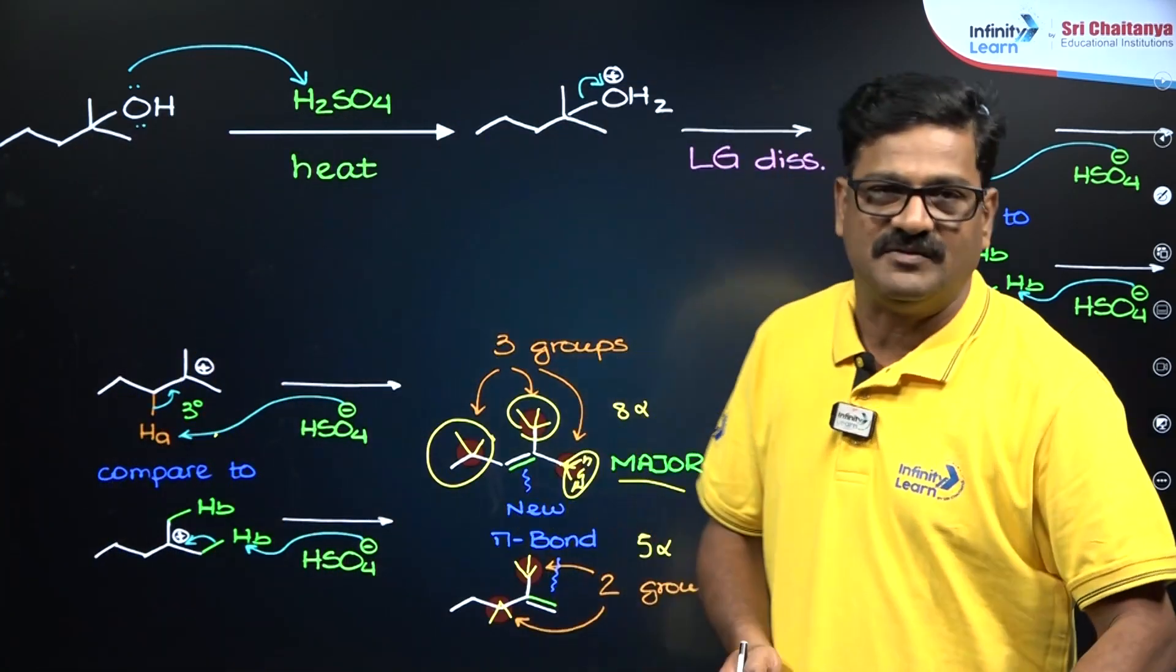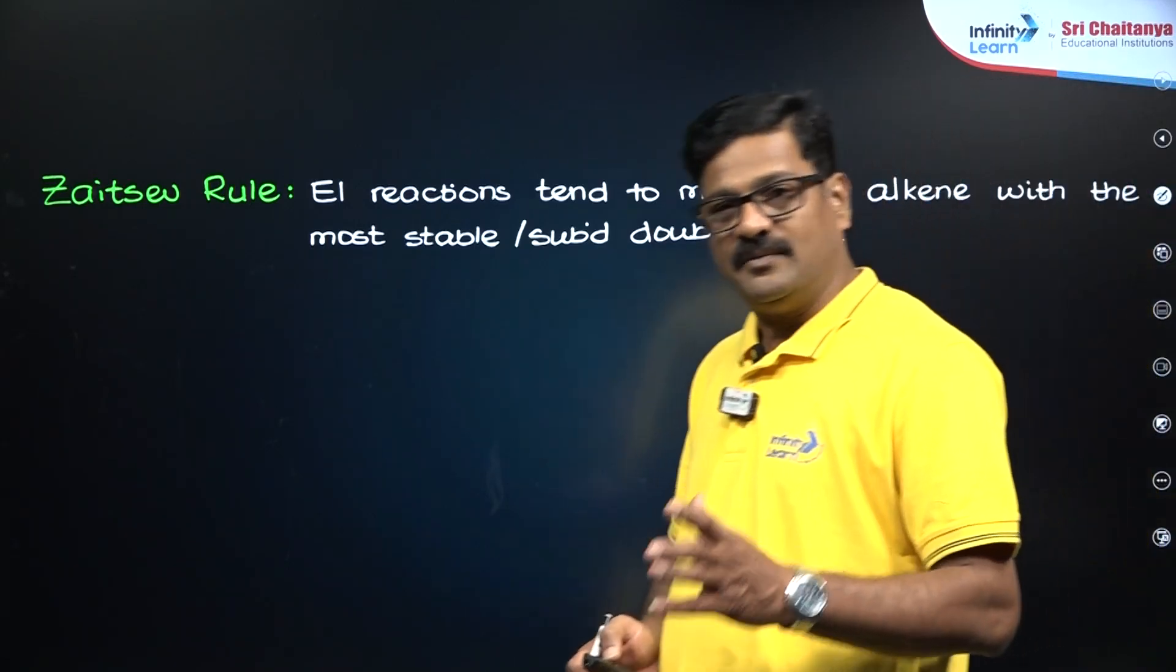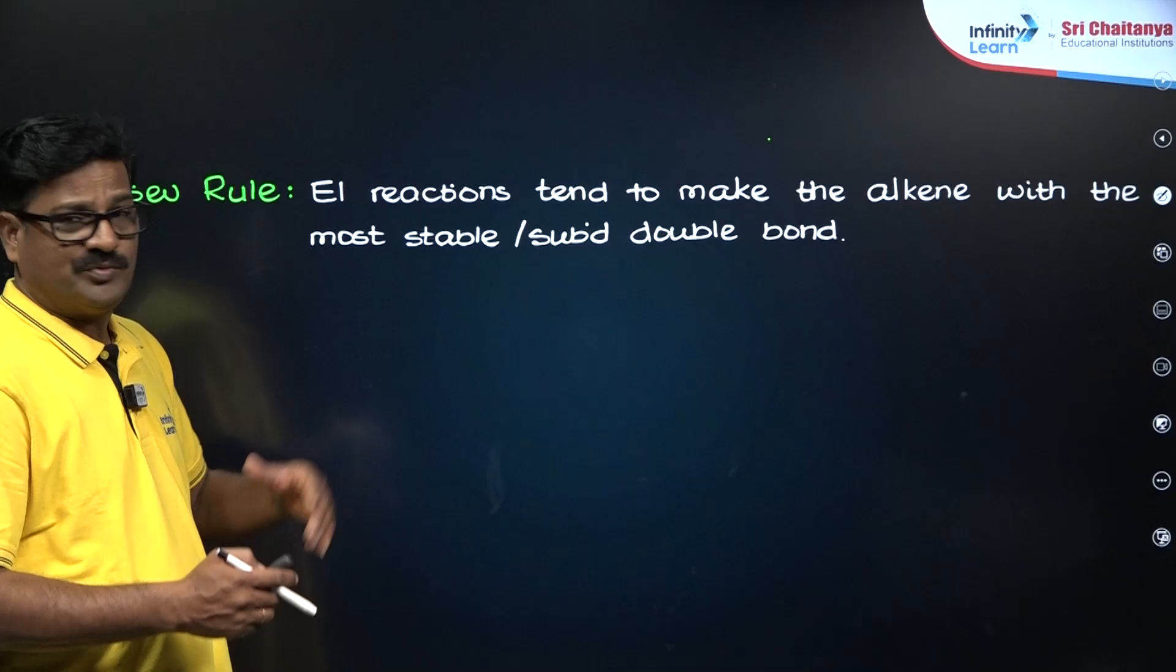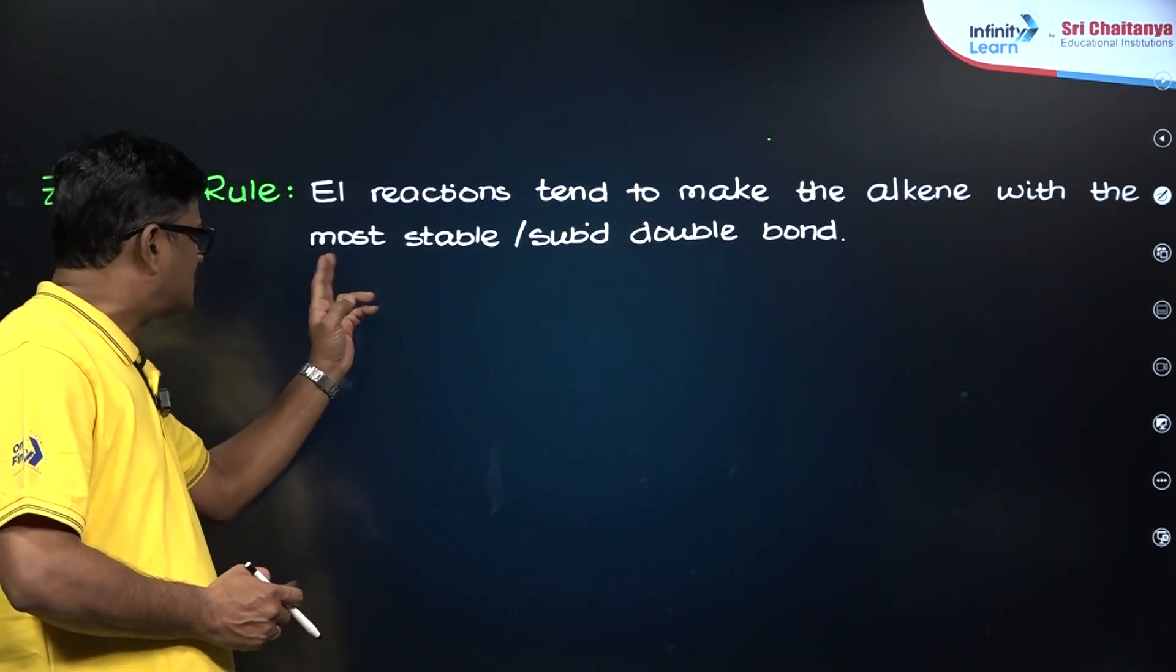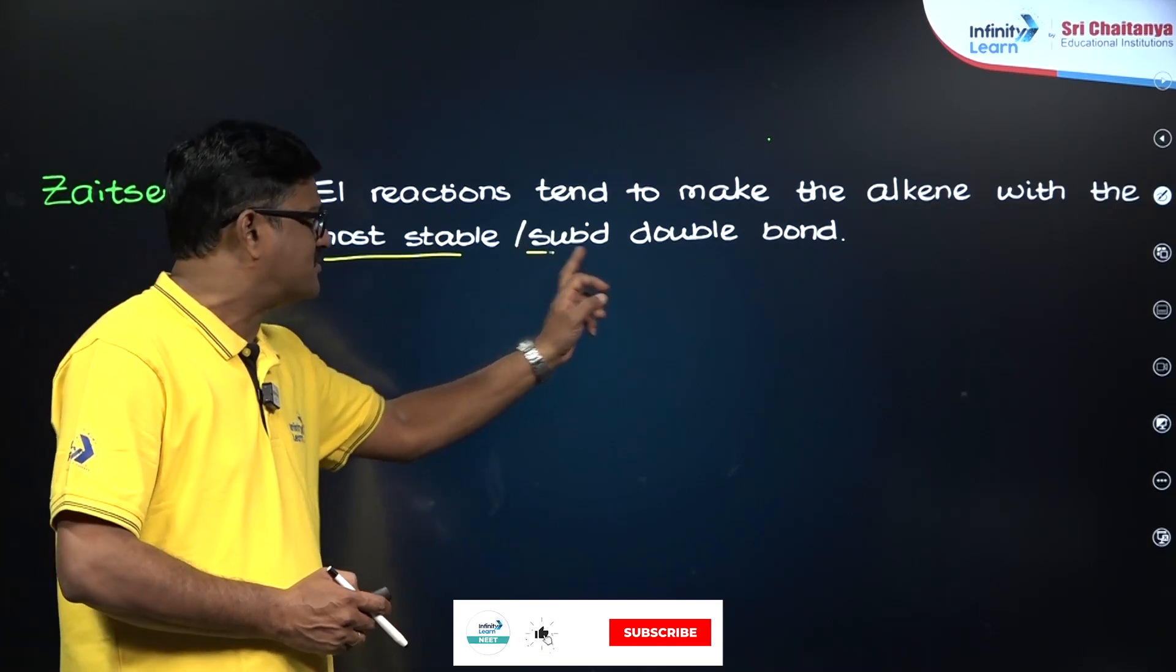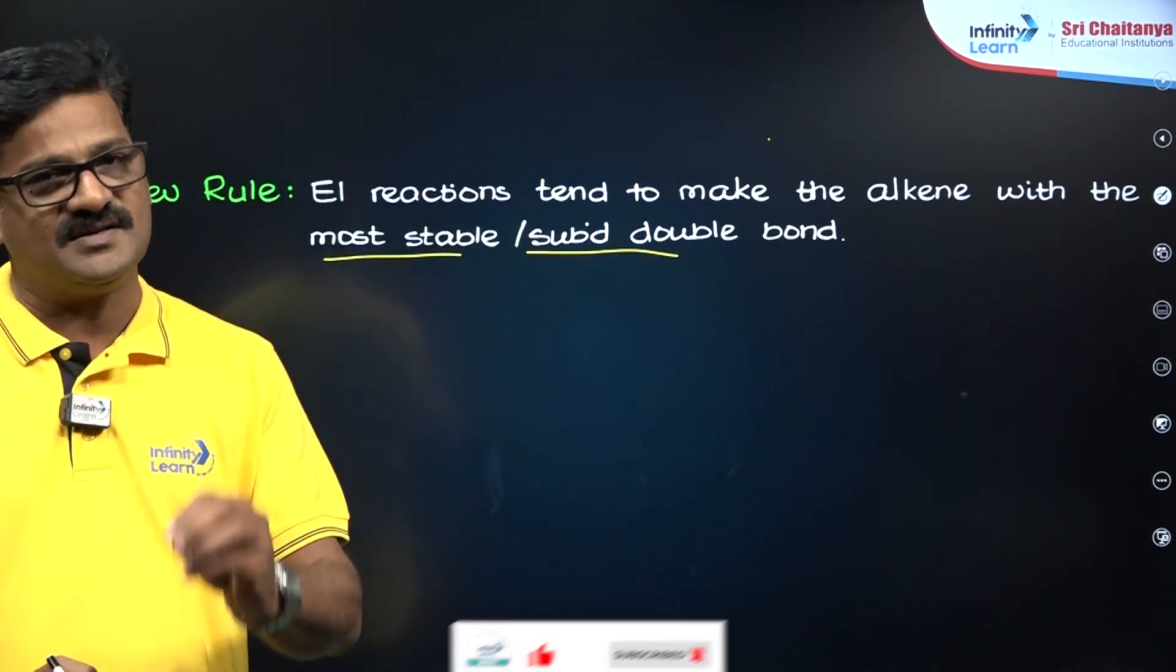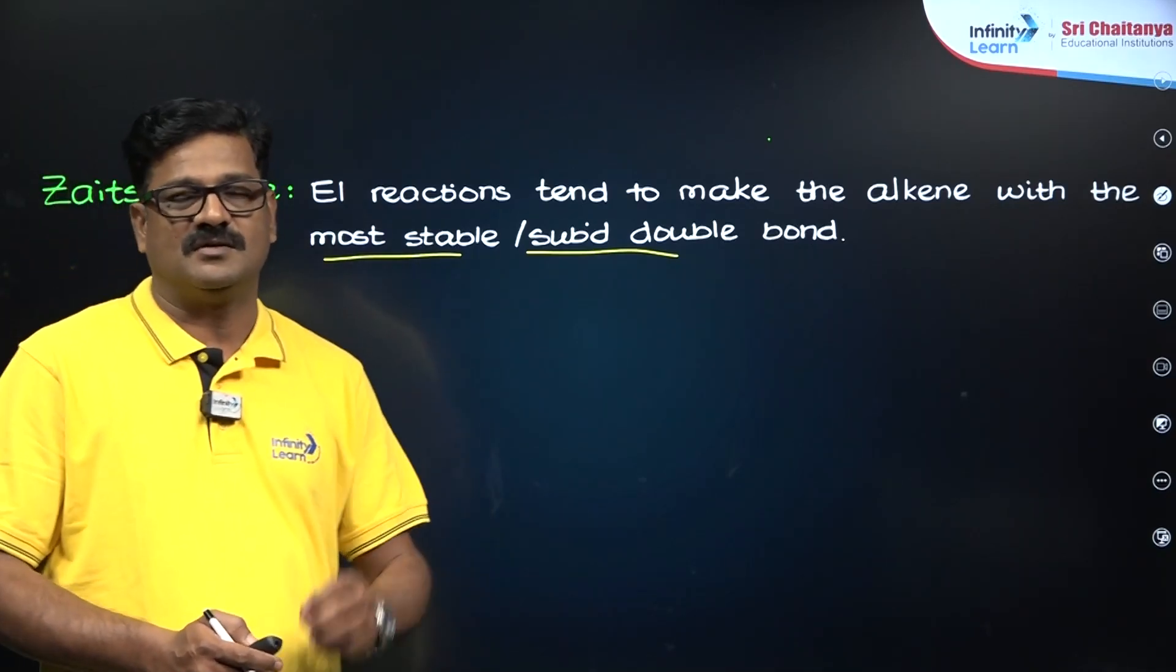Based on this fact, Zaitsev has given a general rule that is called Zaitsev rule. In elimination reaction, in E1 reaction, it could be E2 also, it has a tendency to make the alkene with the most stable or more substituted double bond. That is what is called Zaitsev rule. You can use it anywhere during elimination reactions.